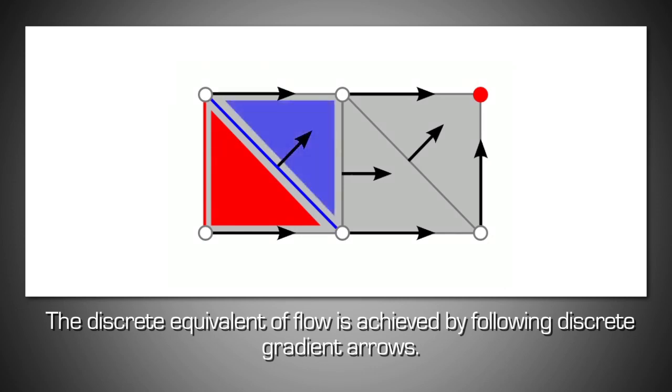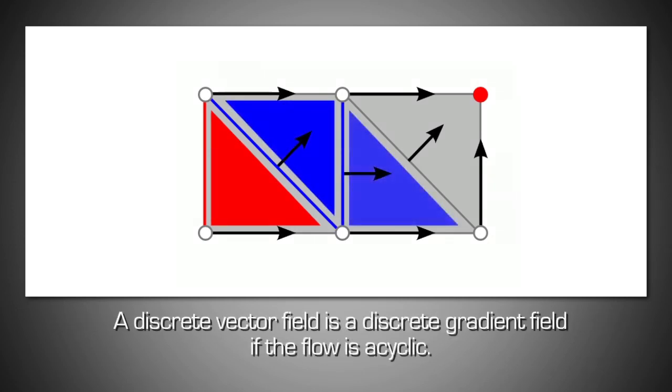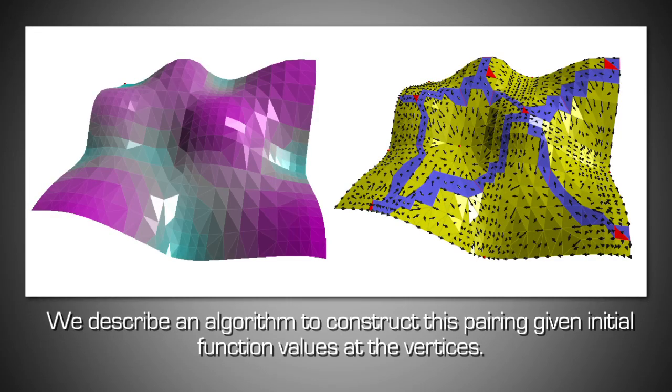The discrete equivalent of flow is achieved by following discrete gradient arrows. A discrete vector field is a discrete gradient field if the flow is acyclic. We describe an algorithm to construct this pairing given initial function values at the vertices.